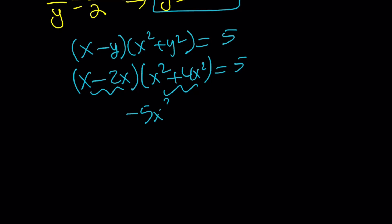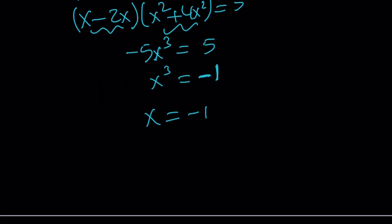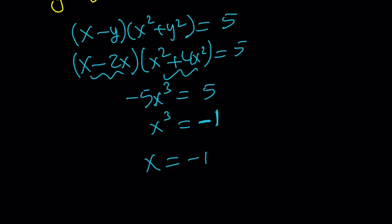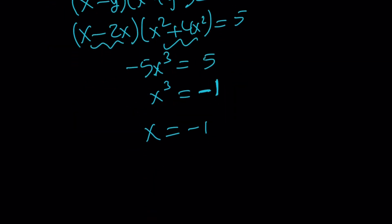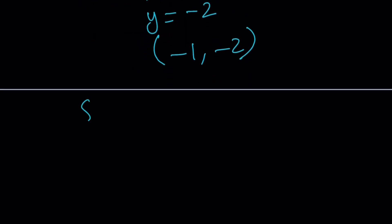Negative 5x cubed is 5. x cubed is negative 1. And x is negative 1. Again, if x is real, it's going to be the cube root of negative 1, which is negative 1. But y is 2x. So, y is going to be negative 2. And that gives us negative 1 comma negative 2 as an ordered pair. So, our solution set is basically made up of negative 1 comma negative 2 and 2 comma 1.